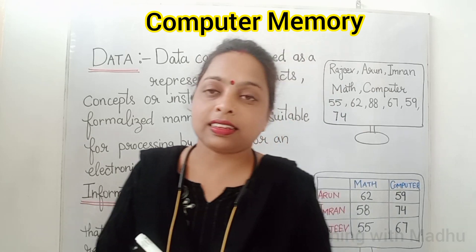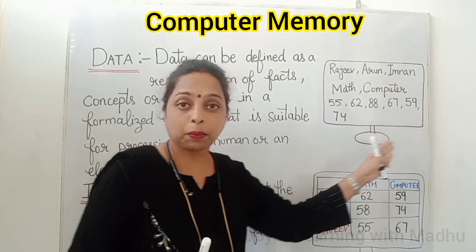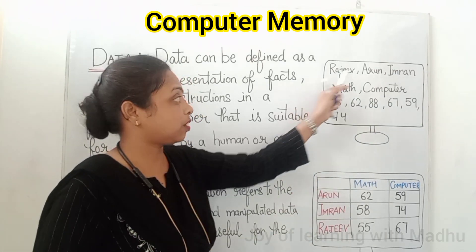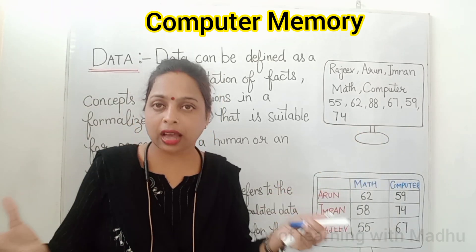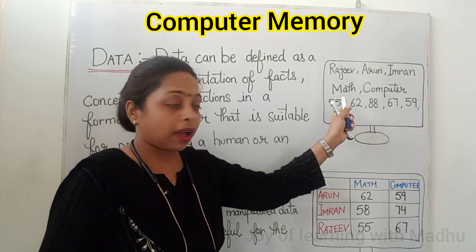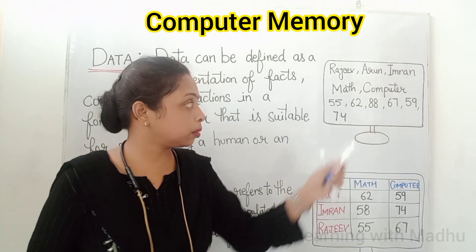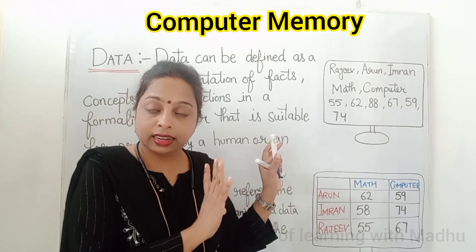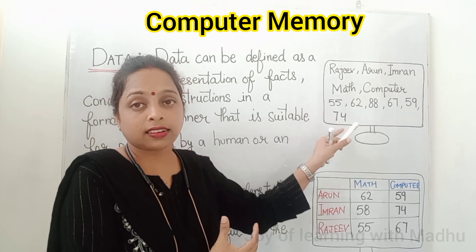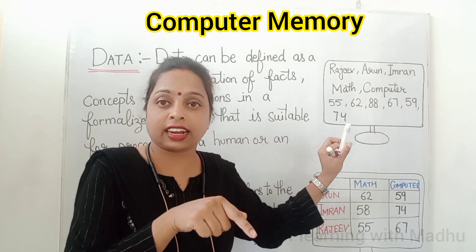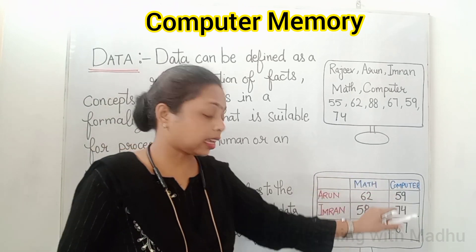I will give you one more example. Your teacher is giving you a report card — that is information. Whatever raw facts are there, those are called data. And when the computer organizes, formalizes, and manipulates it, the result is information.